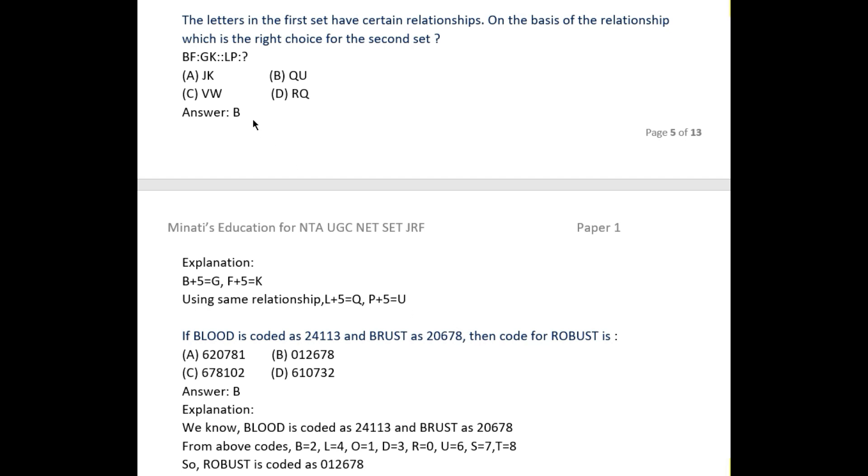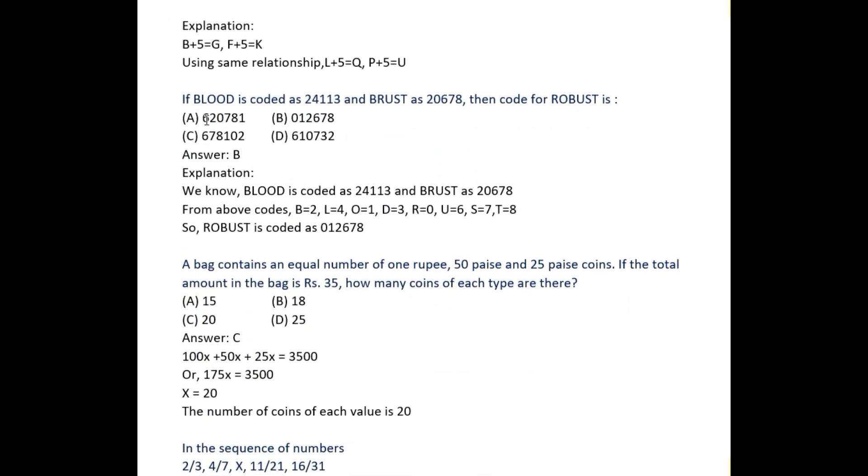Come to the next part. If BLOOD is coded as 24113 and BRUST as 20678, then the code for ROBUST is what? The options are given: A, B, C, D. How to proceed these types of sums?